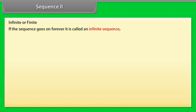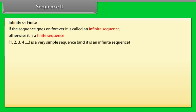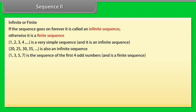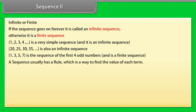If the sequence goes on forever it is called an infinite sequence; otherwise it is a finite sequence. 1, 2, 3, 4, and so on is a very simple sequence and it is an infinite sequence. 20, 25, 30, 35, and so on is also an infinite sequence. 1, 3, 5, 7 is the sequence of the first four odd numbers and is a finite sequence.